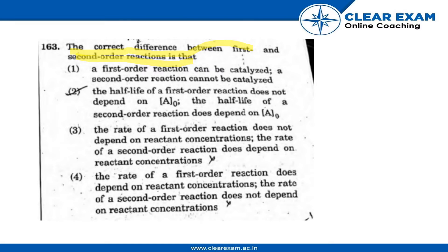Option one states that a first order reaction can be catalyzed but a second order reaction cannot be catalyzed. This is incorrect, because both first and second order reactions can be catalyzed. So the first option is incorrect.